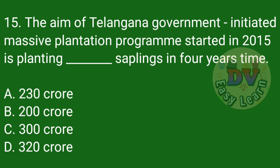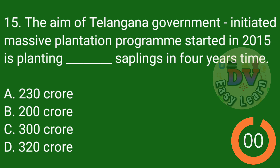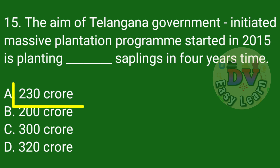Question number 15: The aim of the Telangana government-initiated massive plantation program started in 2015 is planting dash saplings in 4 years' time. Correct answer: 230 crore.